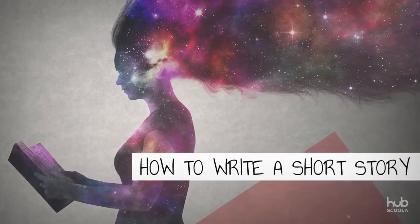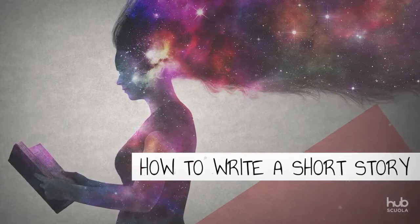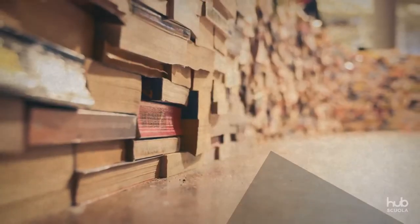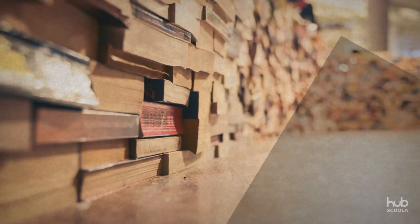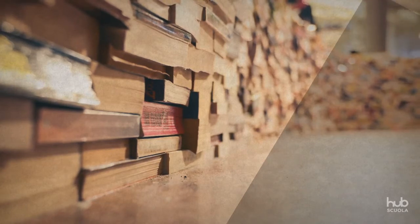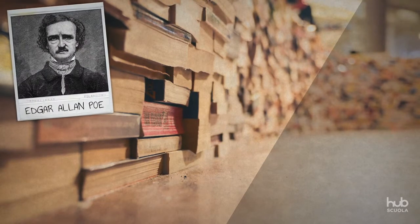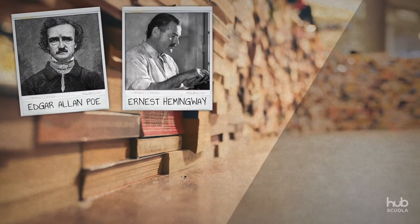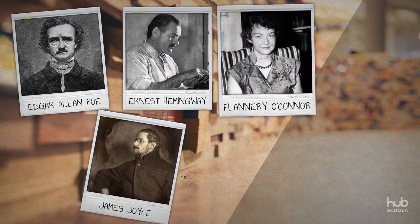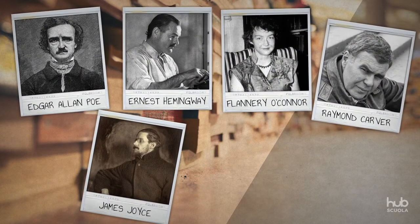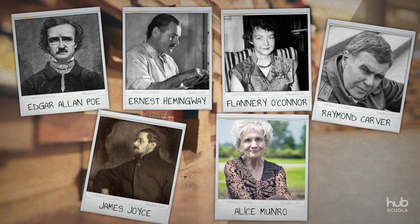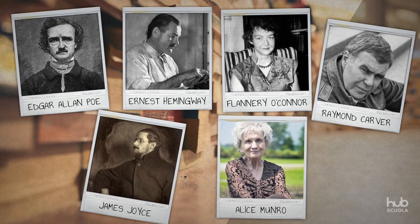How to write a short story. English literature is full of authors who became famous for their short stories. Some examples are Edgar Allan Poe, Ernest Hemingway, James Joyce, Flannery O'Connor, and Raymond Carver. You can even win a Nobel Prize in literature writing only short stories, like Alice Munro did in 2013.